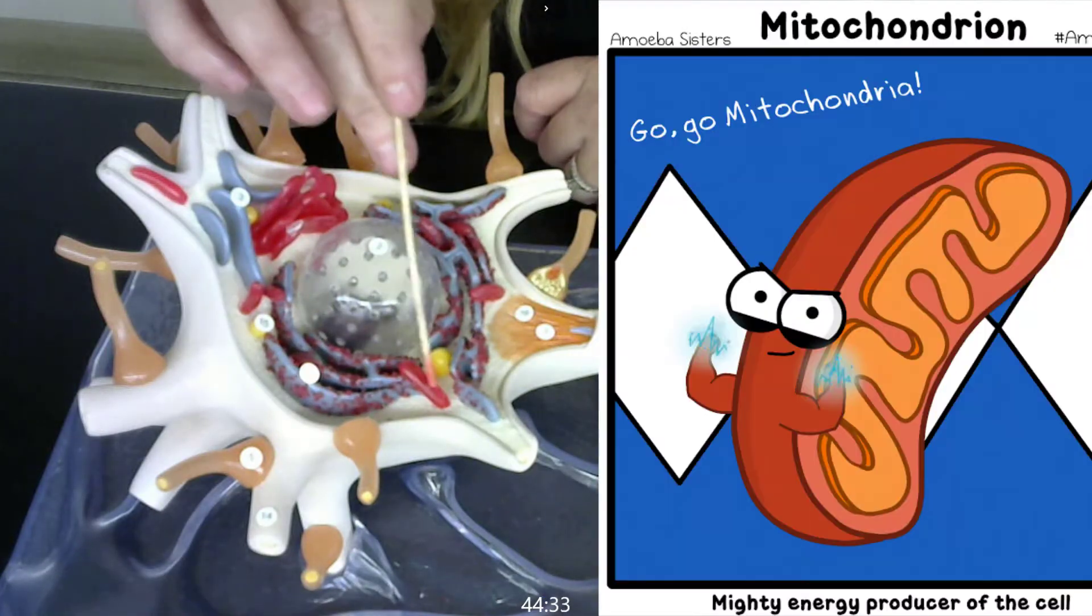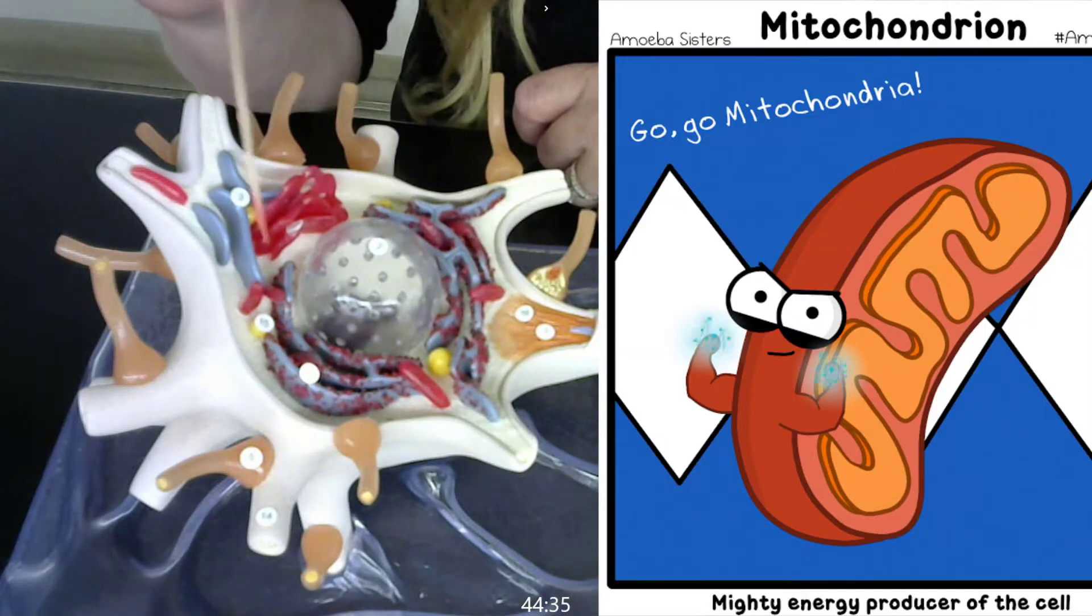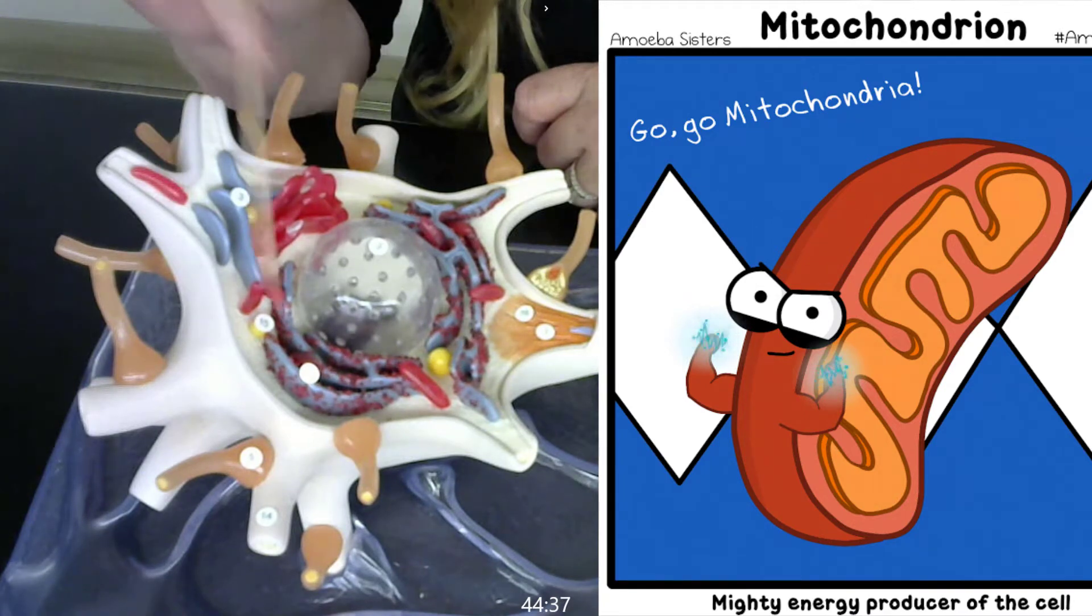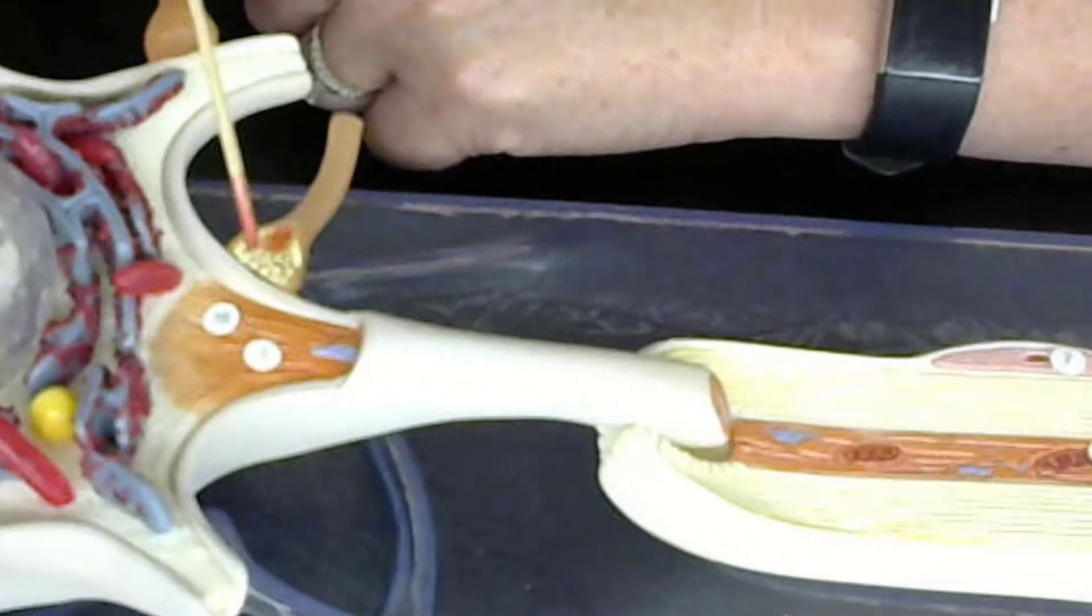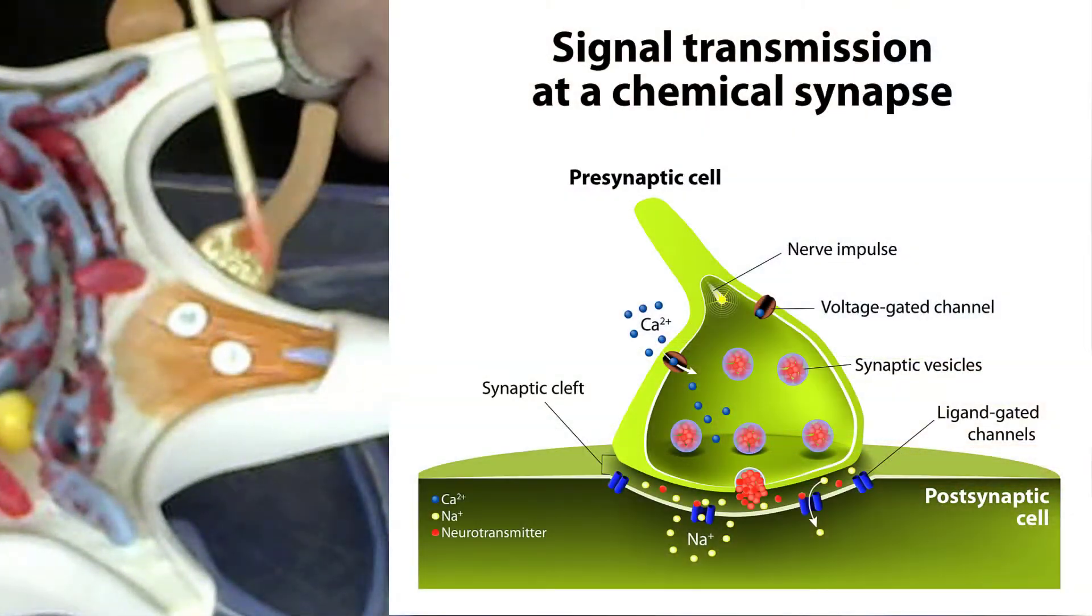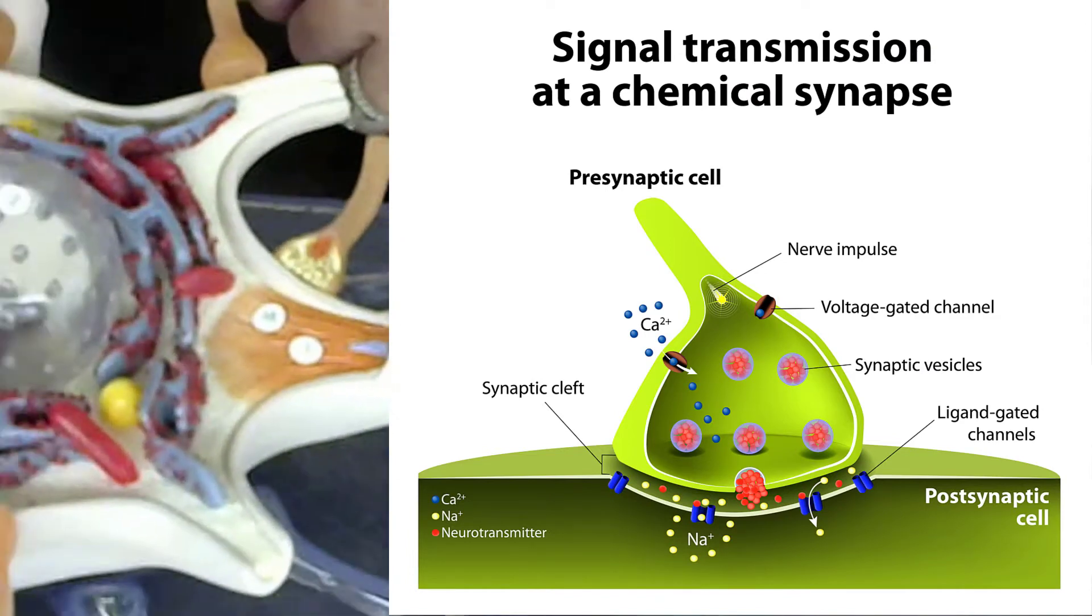The red structures that you see here, these are mitochondria. And I can get a much better view now of this axon terminal and the synaptic vesicles inside of that axon terminal that are filled with neurotransmitters.